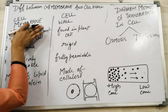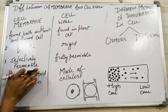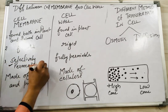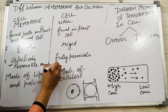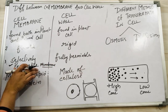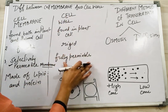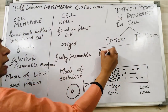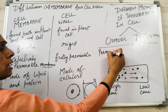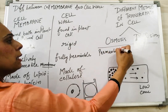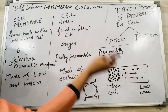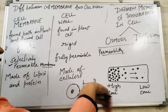The third point between the cell membrane and the cell wall is permeability. The cell membrane is a selectively permeable membrane. We should understand what is meant by a selectively permeable membrane and what is meant by a fully permeable membrane. Permeability means allowing something to pass in or out of the cell — a method of passing something into the cell or out of the cell.